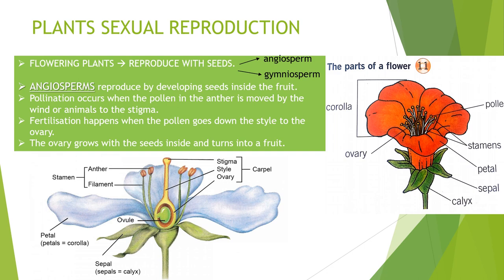Plants reproduce in different ways. Today we are going to review sexual reproduction. There are different types of flowers and plants, and these ones are flowering plants, which means that they are going to reproduce with their seeds. There are two different types of flowering plants.